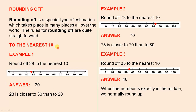To the nearest 10. Example 1: Round off 28 to the nearest 10. The answer is 30 because 28 is closer to 30 than to 20. Example 2: Round off 73 to the nearest 10. The answer is 70 because 73 is closer to 70 than to 80.